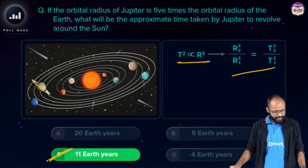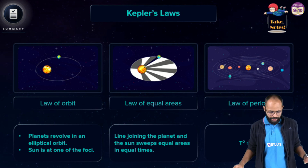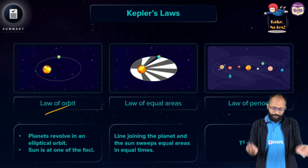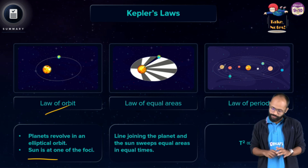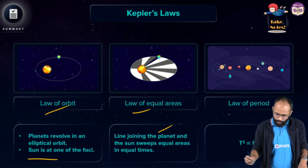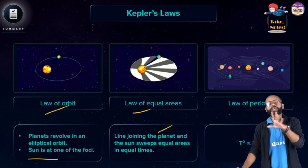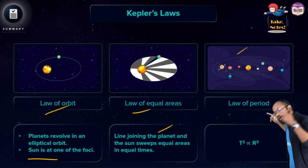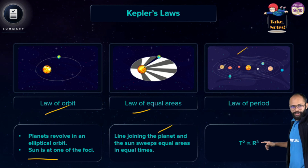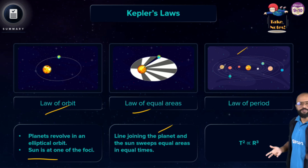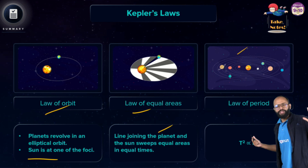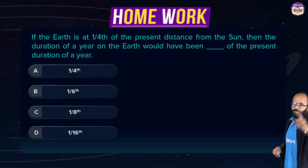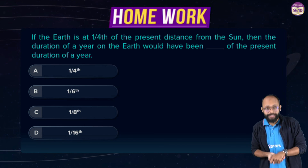Summary of Kepler's three laws: First, the Law of Orbits — planets revolve in elliptical orbits with the sun at one focus. Second, the Law of Equal Areas — the line joining the planet and sun sweeps equal areas in equal time. Third, the Law of Periods — T² is proportional to the cube of the semi-major axis length.